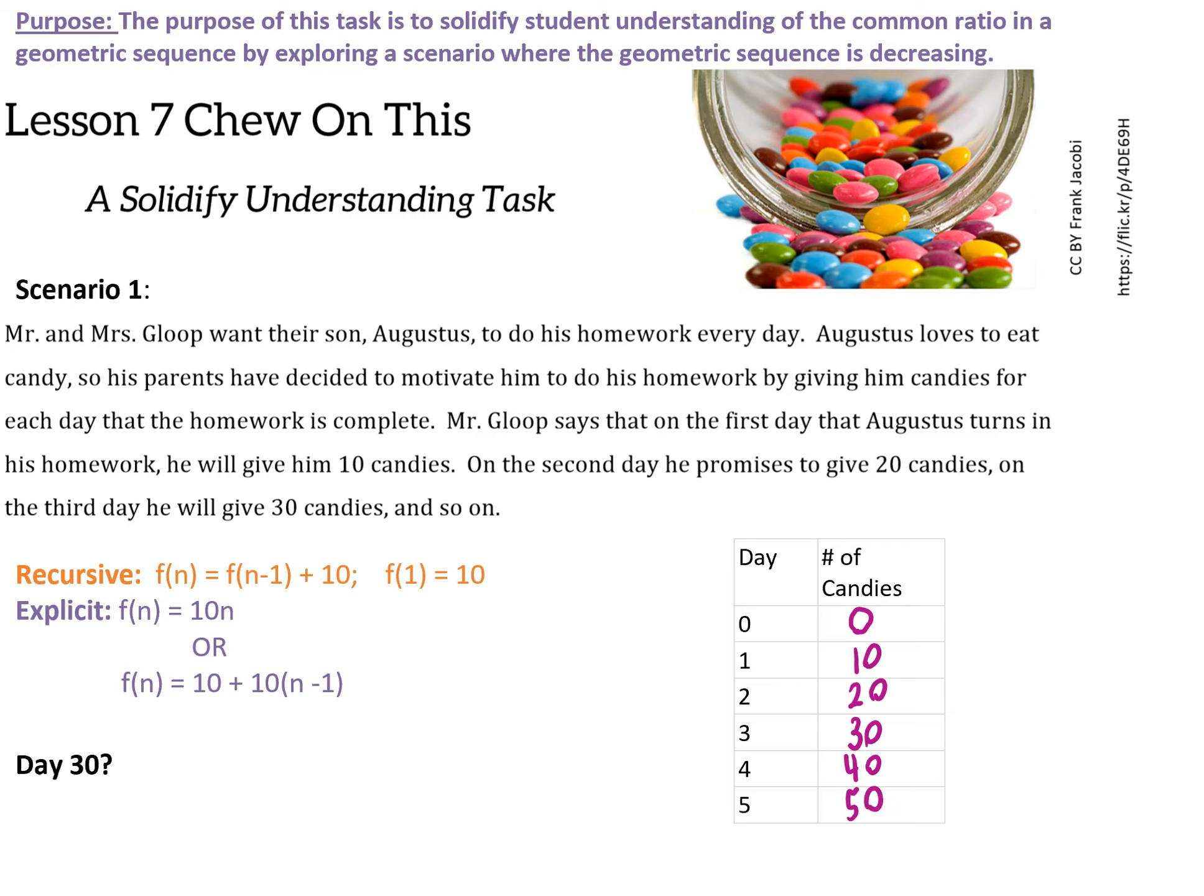So we have the recursive rule shown here: f(n) = f(n-1) + 10, and f(1) = 10. So if you use that fact f(1) = 10, you would get this explicit rule down here: 10 + 10(n-1), because remember when we have the n = 1 term, we have to do n-1 in our rule.